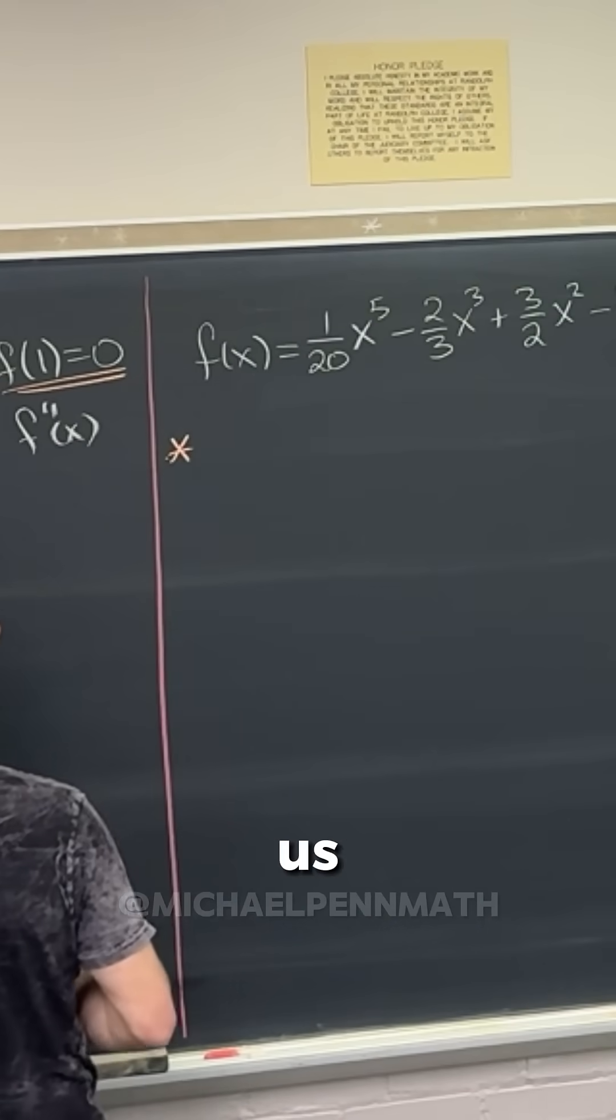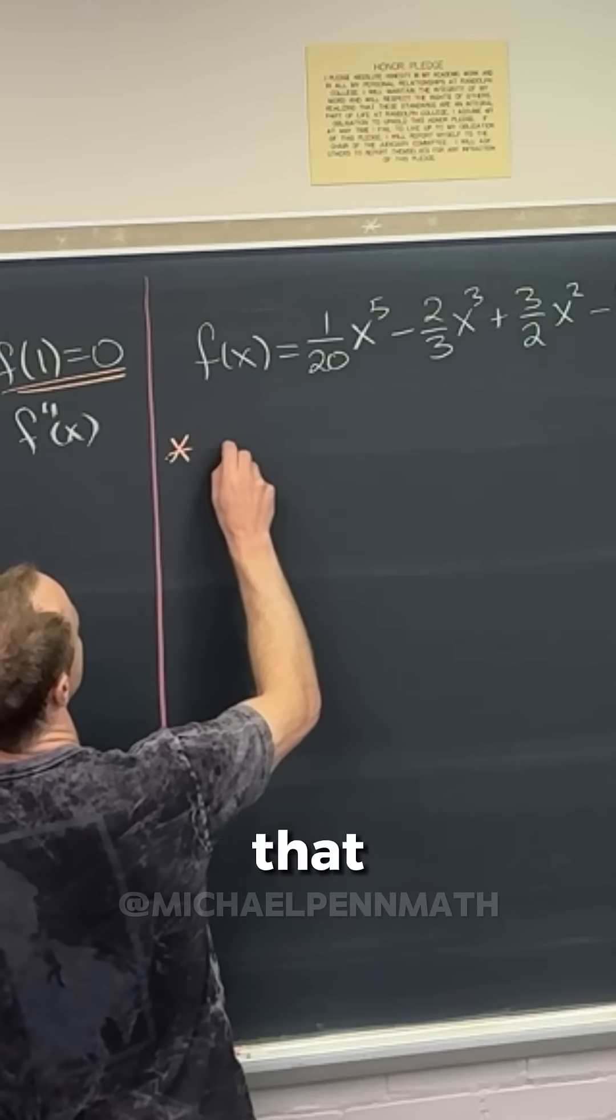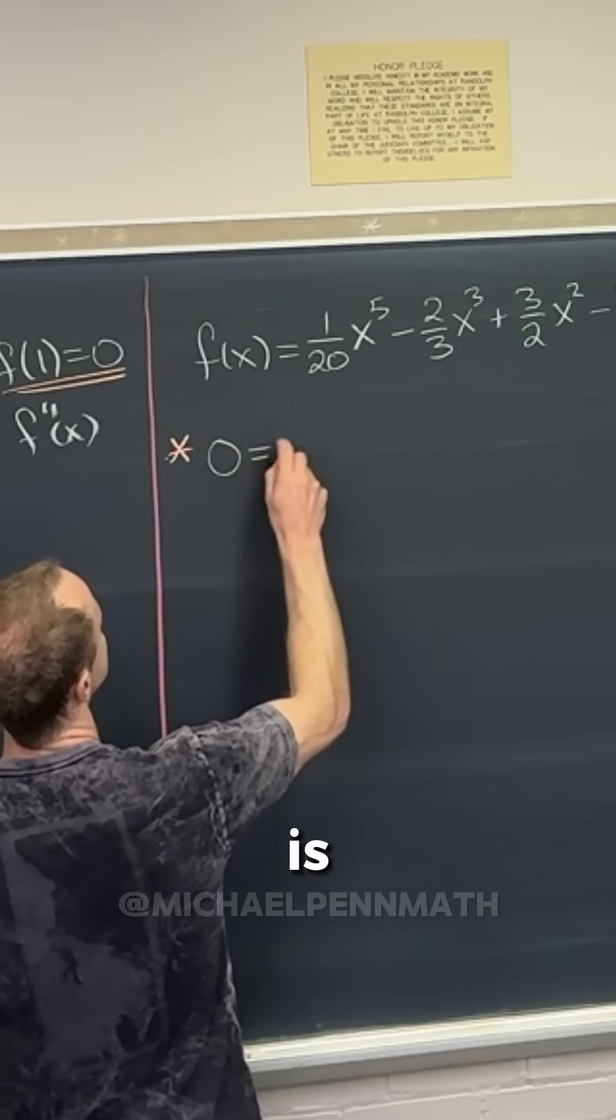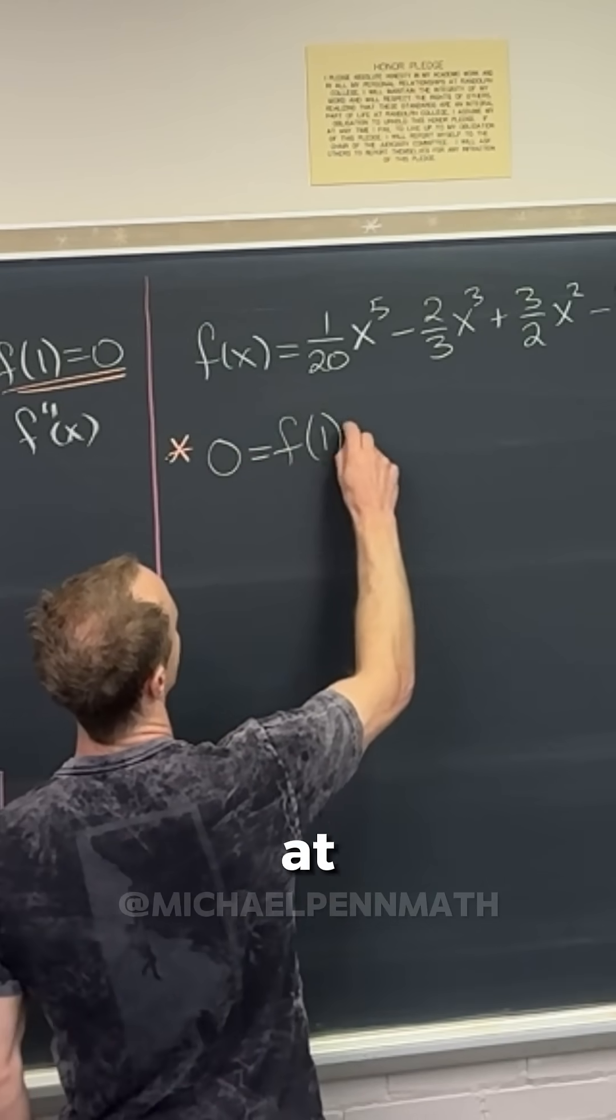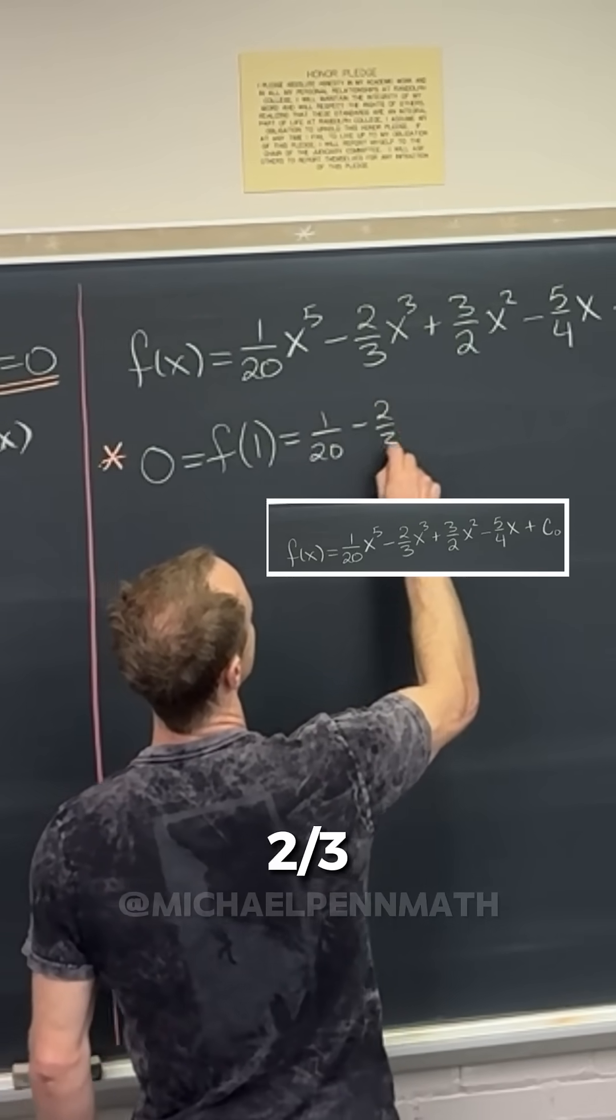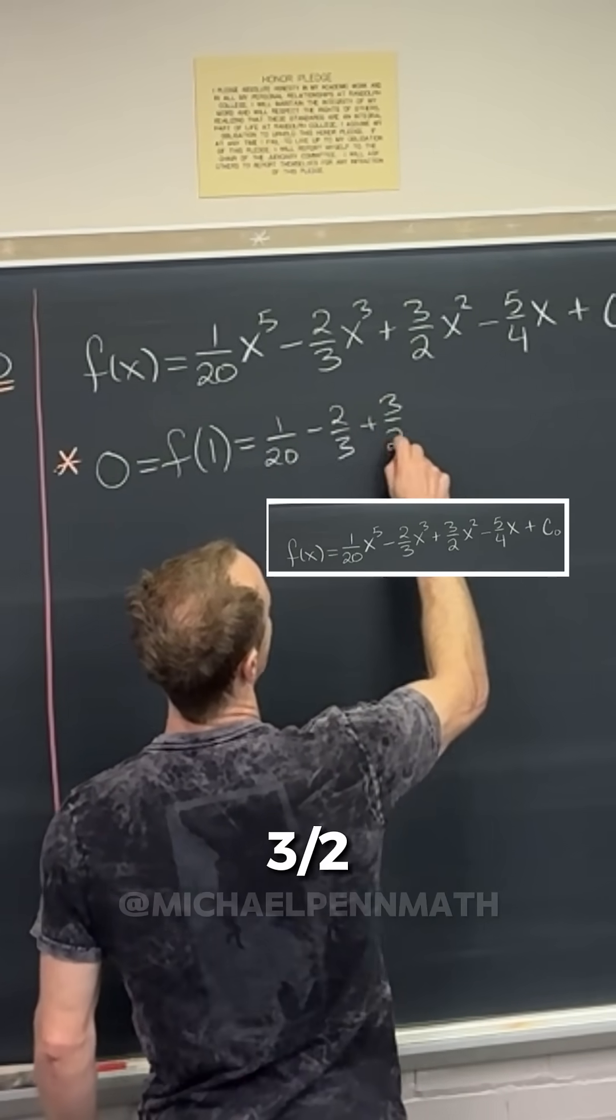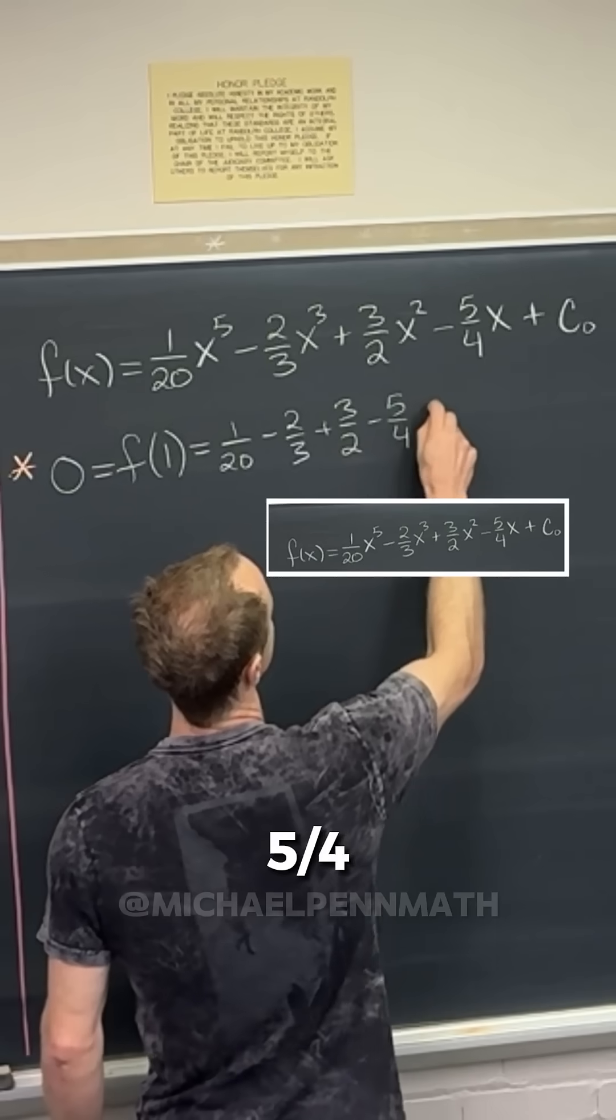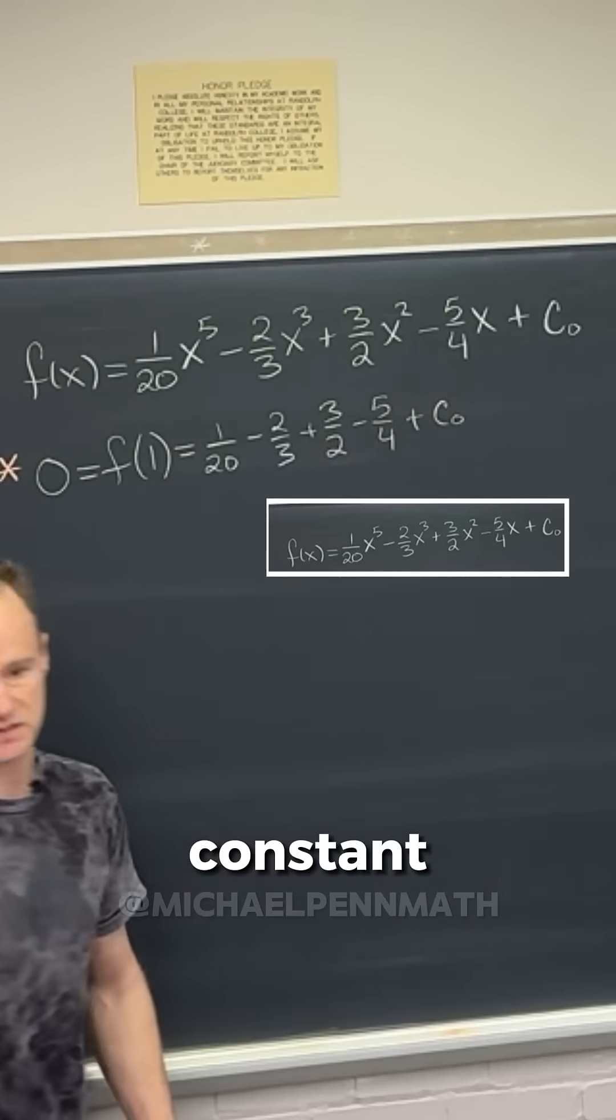So that's going to give us an equation for c zero. So observe that we get zero is equal to f evaluated at one, which is equal to a 20th minus two thirds, plus three halves, minus five quarters, minus five quarters, plus this constant c zero.